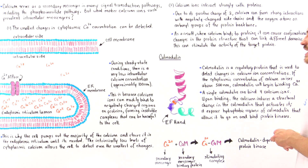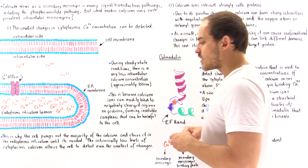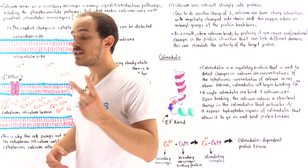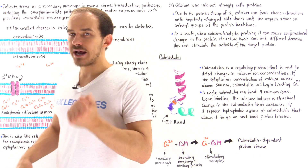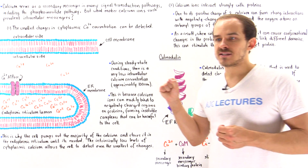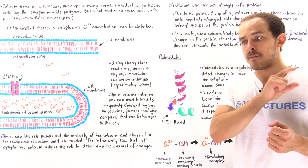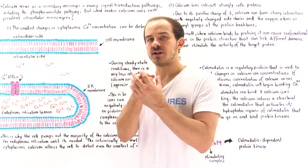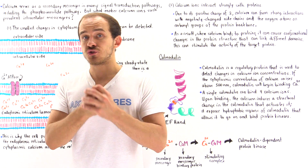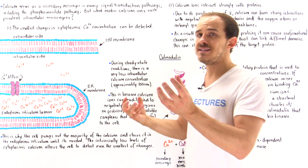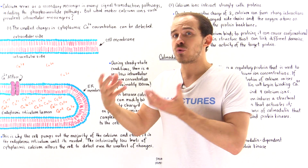Now let's move on to fact number two about calcium that makes it such a prevalent secondary messenger molecule: calcium ions interact strongly with proteins. Calcium ions have a charge of positive 2, and from Coulomb's law, the greater the charge, the greater the electrostatic force. So calcium ions can locate the negatively charged side chain groups of proteins, or they can bind to the oxygen of the carbonyl groups found on the protein backbone. This forms strong interactions, and once those interactions form, calcium can induce conformational changes in the structure of the protein.